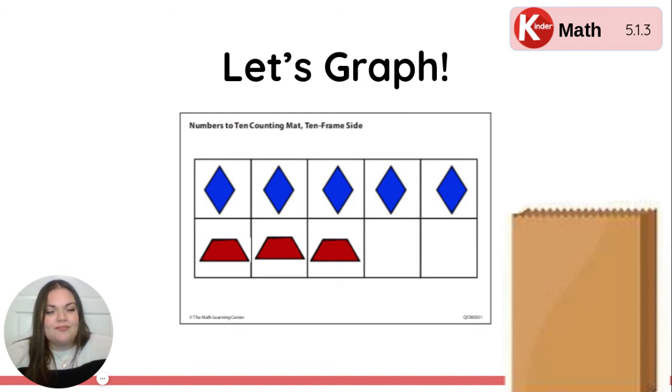Let's look at our shape graph. Which shape did we have the most of? The most rhombuses. We had five of those. Good. Which shape did we have the least of? Yes. We have the least amount of trapezoids. We only have three. Look at our numbers to 10 counting mat. Can you quickly see how many more shapes we would need to fill it up? How many spots are still open? That's right. Two. One. Two. We have two open spots on our counting mat.